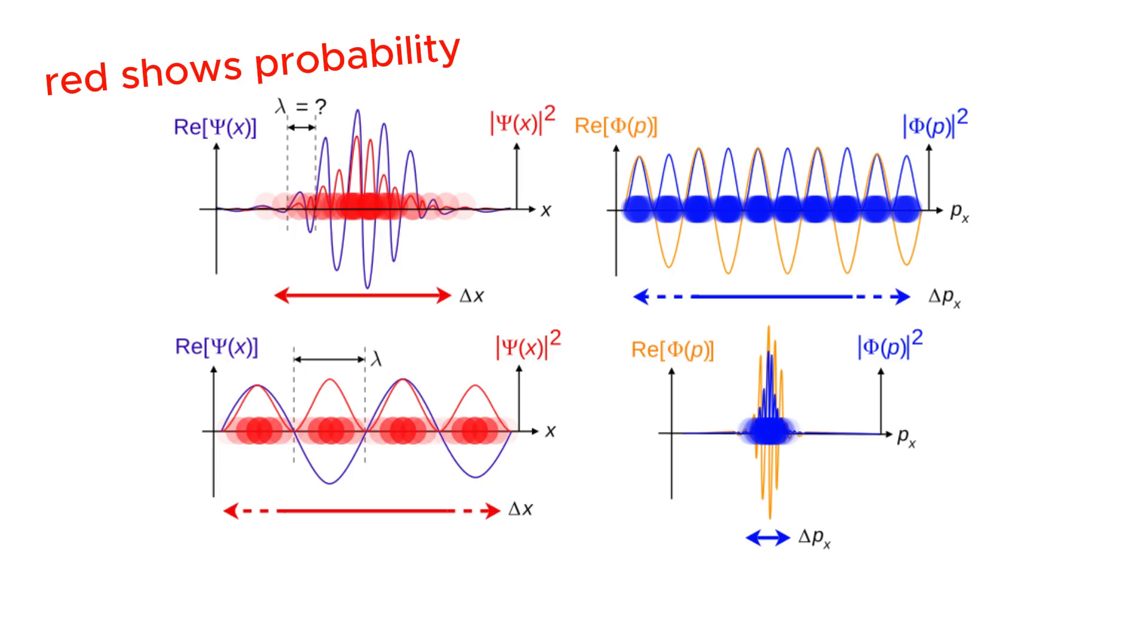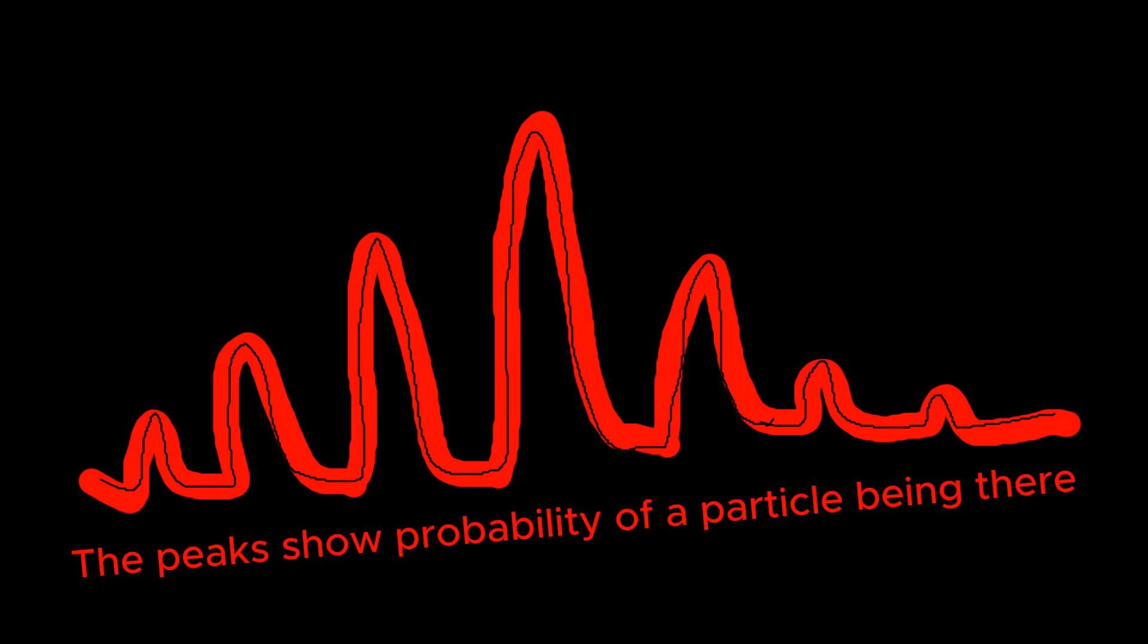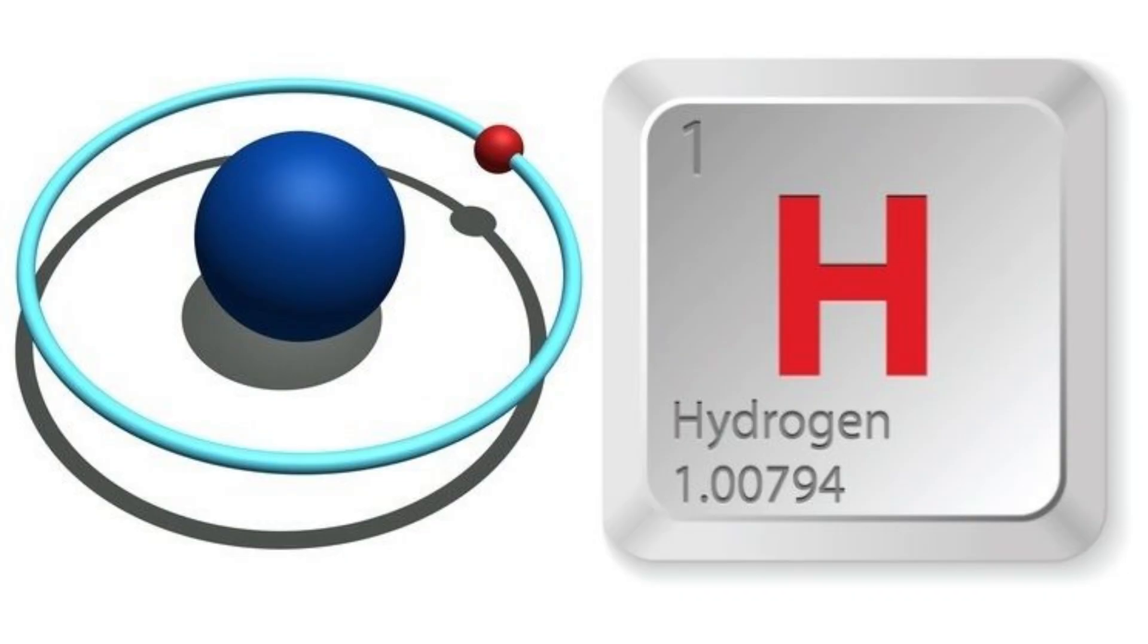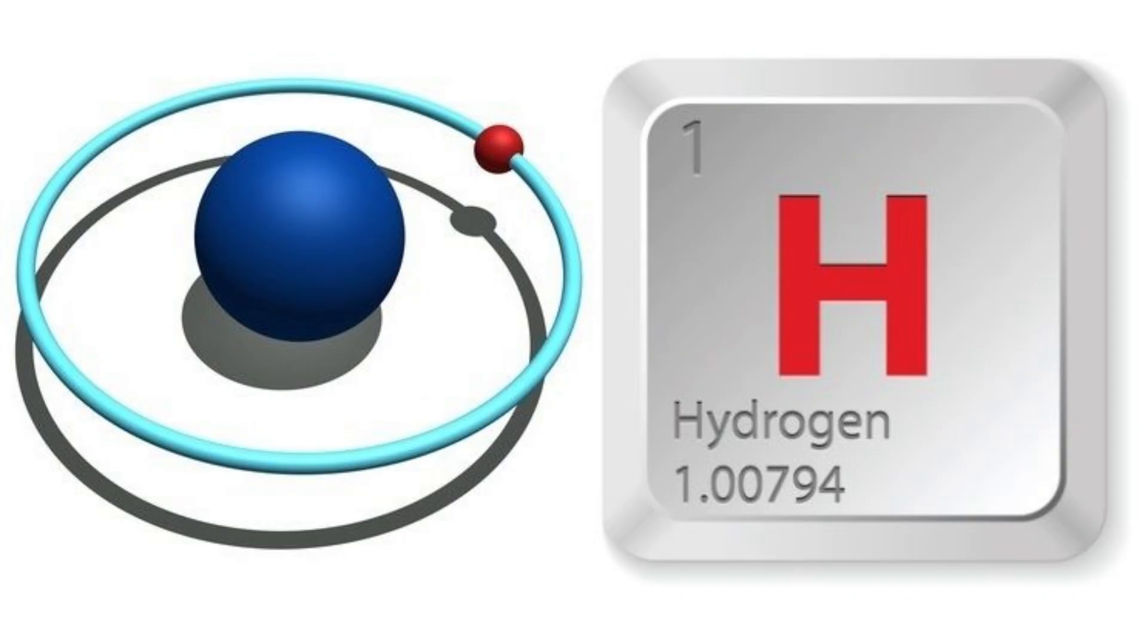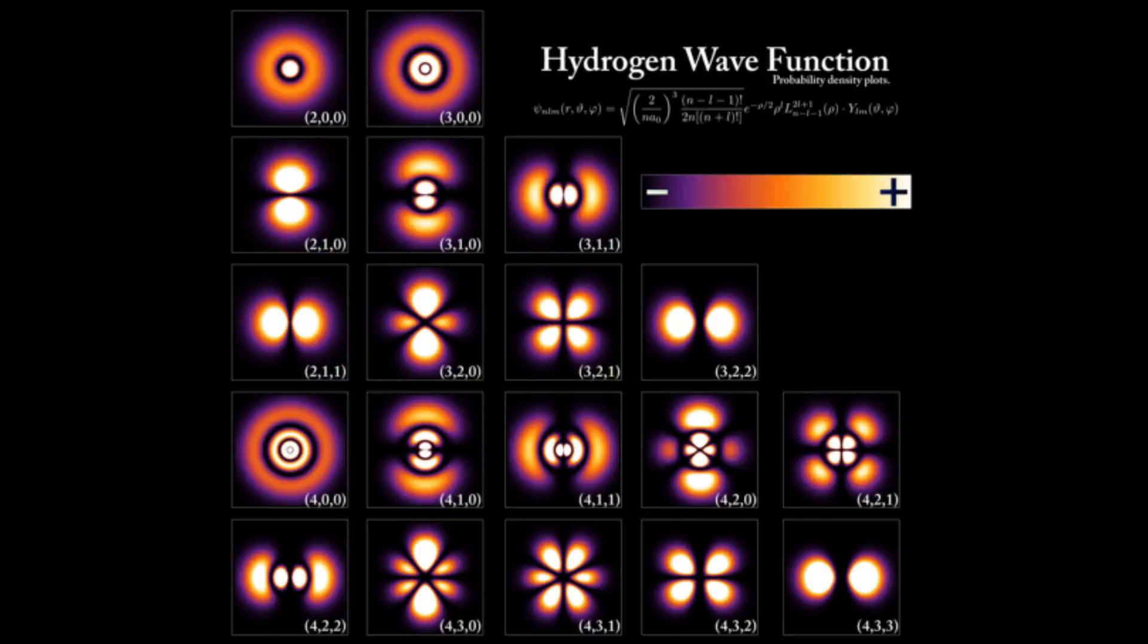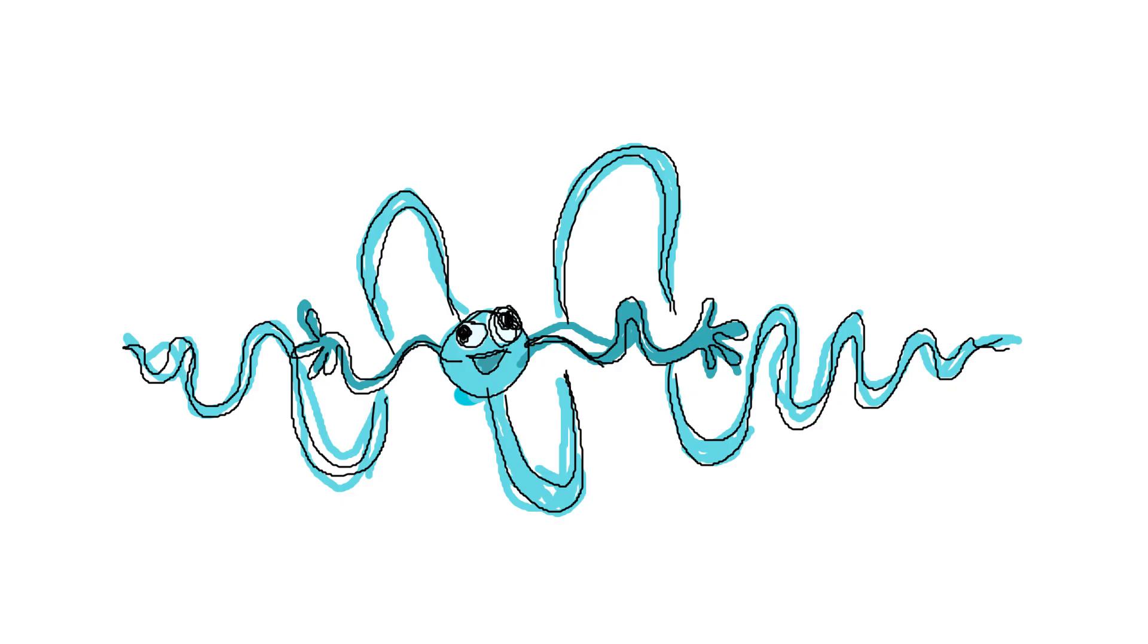Because of this, we describe particles like electrons using probabilities, as clouds or as waves of where they might be. For example, in a hydrogen atom, the electron isn't orbiting around like a planet. Instead, it exists as a probability cloud around the nucleus. You don't know where it is, but you can guesstimate where it might be.